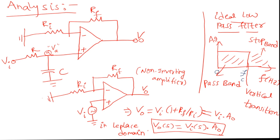Here is the circuit diagram of a first-order active low-pass filter, connected in non-inverting configured mode, because the input voltage is applied to the non-inverting terminal. The plus terminal is the non-inverting terminal and the minus terminal is the inverting terminal. RI is the input resistance of the operational amplifier, RF is the feedback resistance, and R and C are the RC network parameters. I have assumed the intermediate node as point A, with voltage VA at that point.